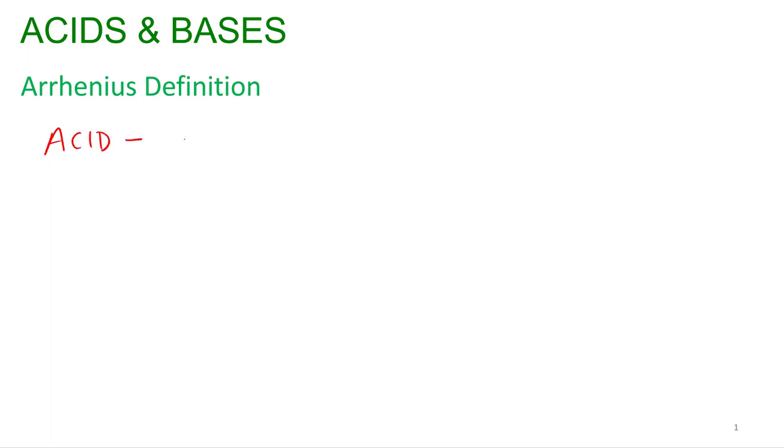So for the Arrhenius definition of acids, an acid is a substance that produces what? What do they produce? H+. Good. So they produce H-plus ions in solution.